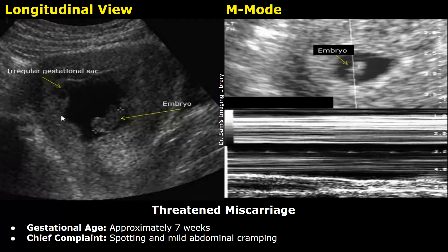Hello everyone, this is Dr. Sam and this video is about miscarriage ultrasound reporting. You will learn how to write ultrasound reports regarding miscarriages. The reports will include the gestational age, chief complaint, findings, impression, and recommendations. Our first case is of threatened miscarriage; gestational age approximately seven weeks, chief complaint: spotting and mild abdominal cramping.